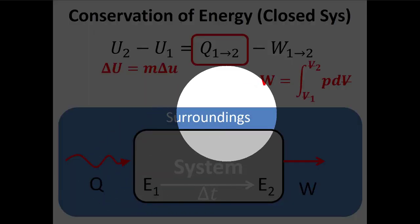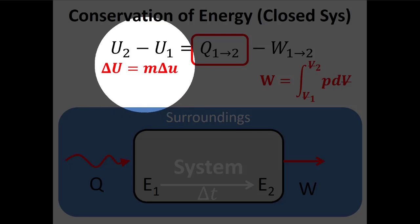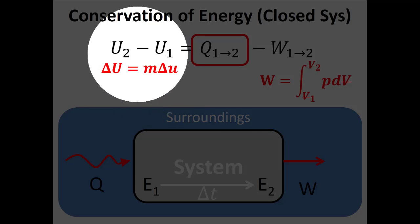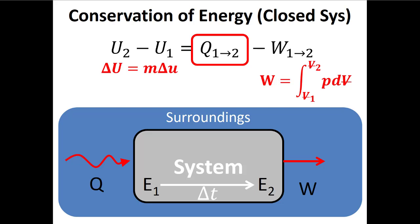Notice that to get to this equation we've already assumed a couple of things. First, the system is closed — because if it's not a closed system I can't use this equation. Second, we're neglecting changes in kinetic or potential energy, so we're saying that the change in energy is mostly determined by the change in internal energy.